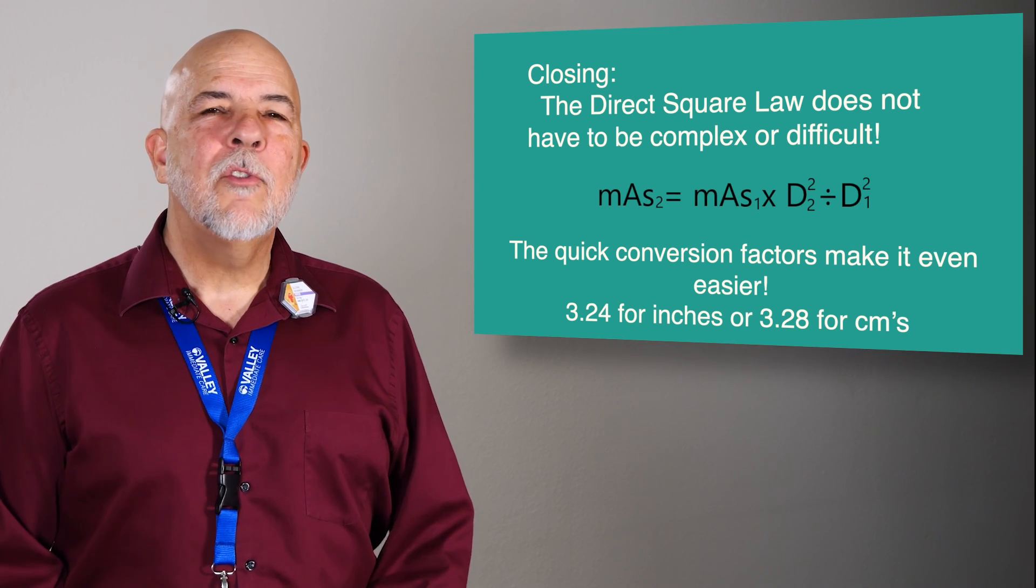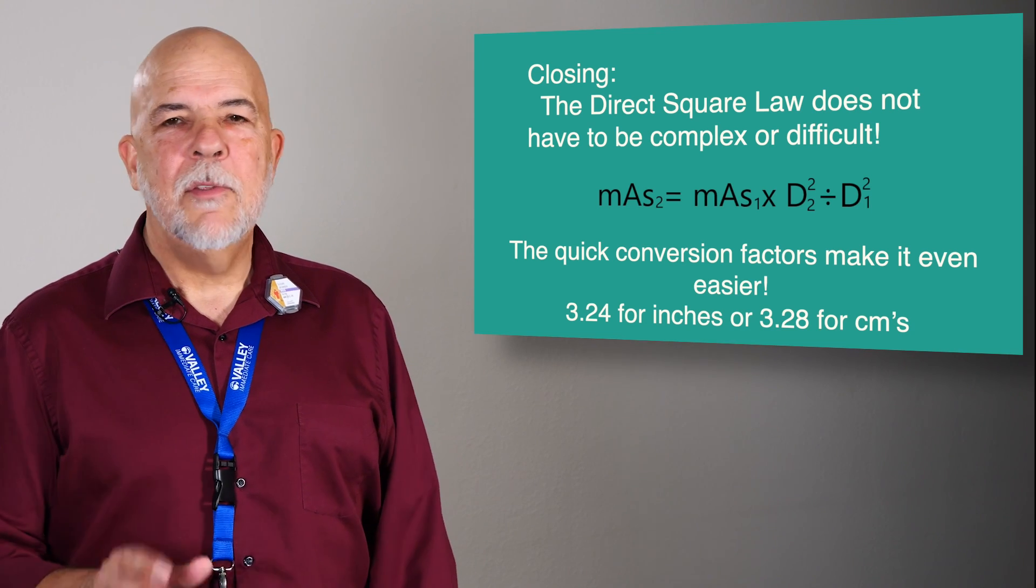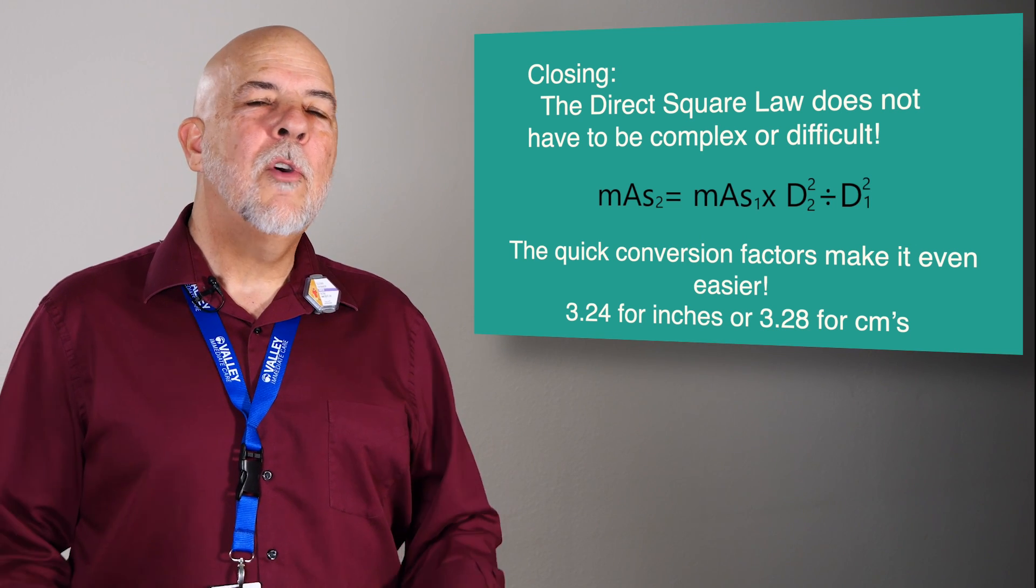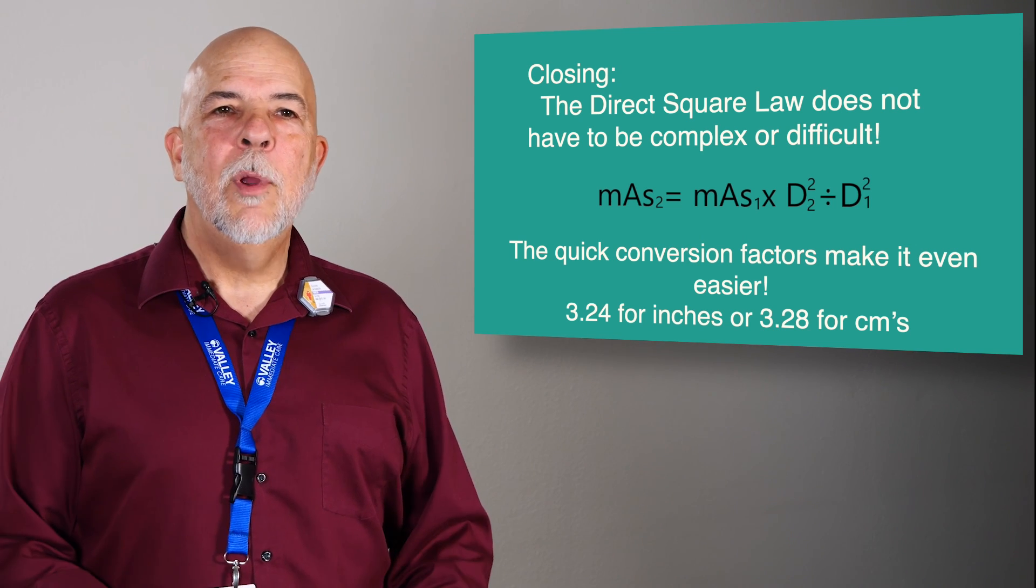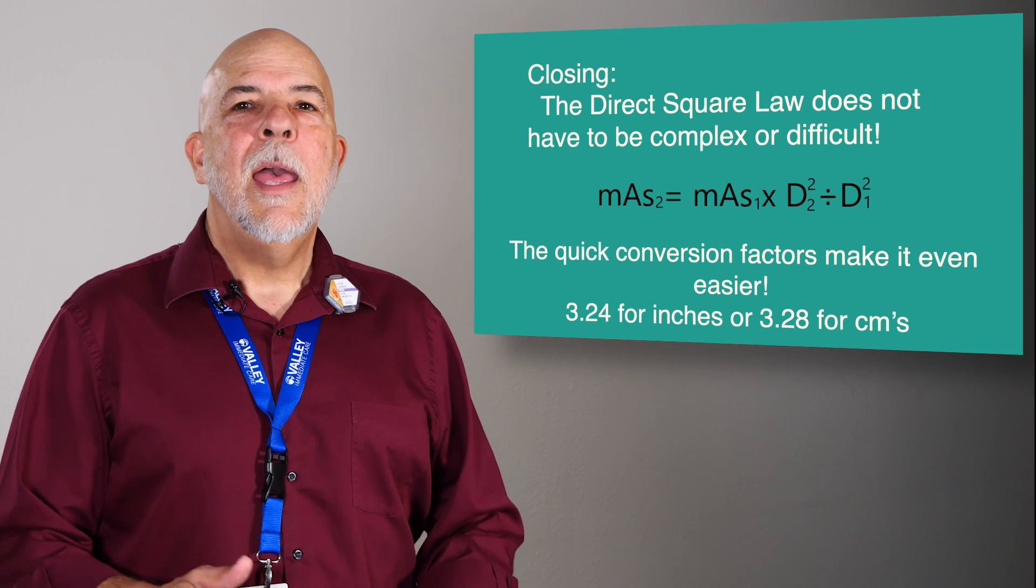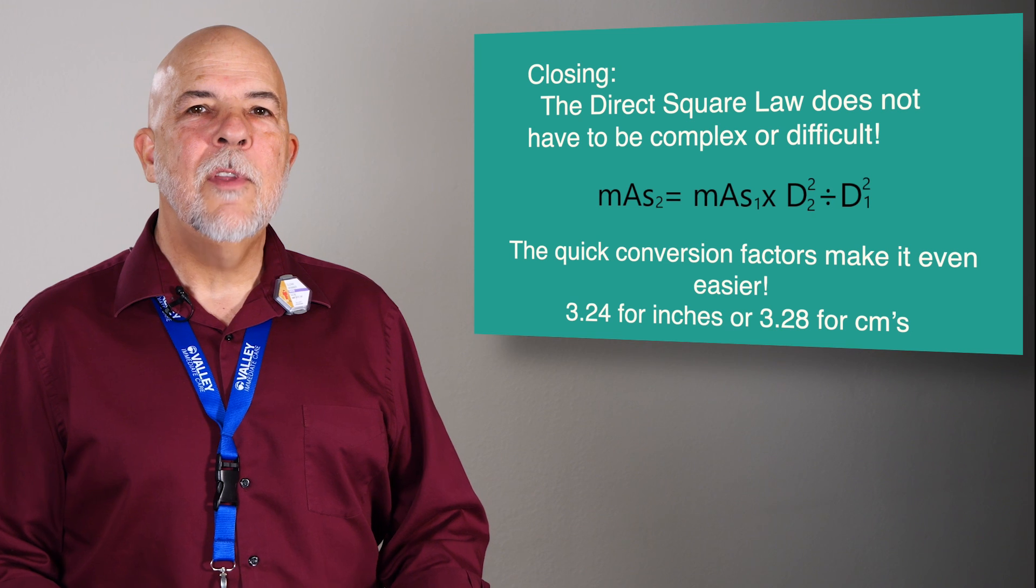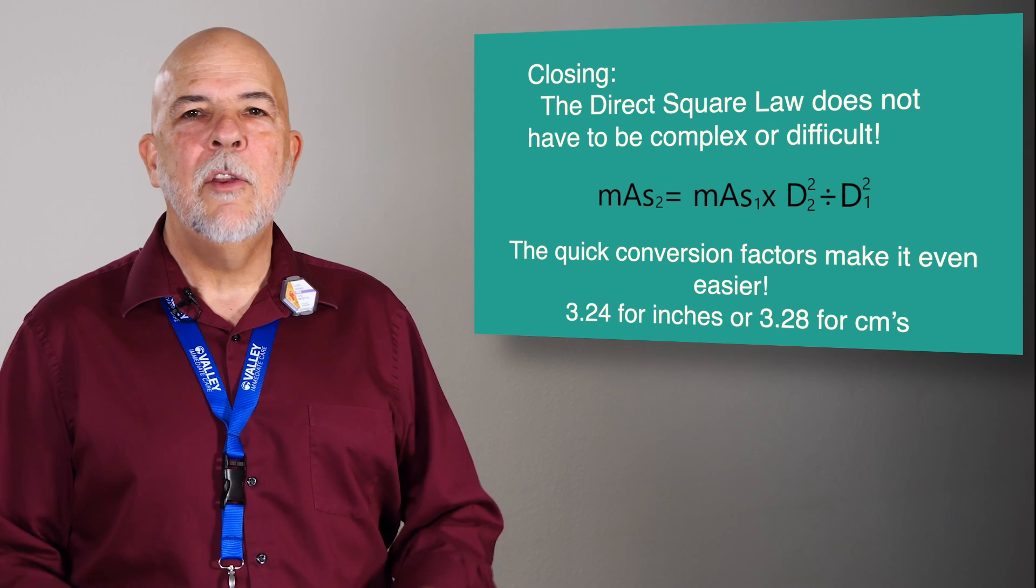So that's direct square law simplified. It doesn't have to be complex or difficult. Just remember the formula and the quick conversion factors of 3.24 for inches and 3.28 for centimeters, moving from 40 to 72 inches or from 180 to 100 centimeters. And that's the direct square law or the exposure maintenance formula made simple with Penumbra Brothers where we focus on you.